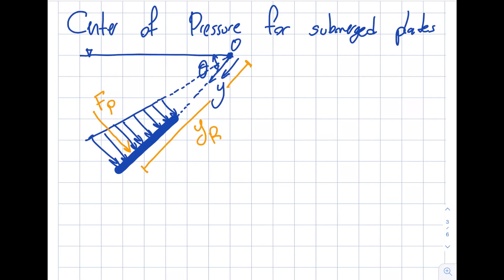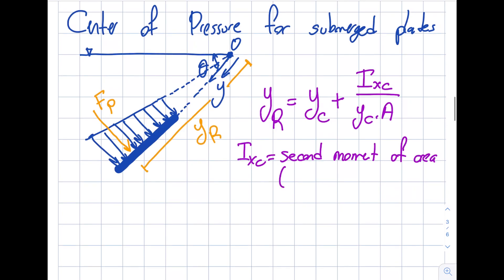This is a very typical statics problem from your statics course, so there's nothing new in here. I'm not going to be deriving it for you, but I will be writing the final equation. Here's what it says: YR equals YC plus IXC divided by YC times A. If I continue the same type of analysis, I will get XR as well, and it looks symmetric: XC plus IXYC divided by YC times A.